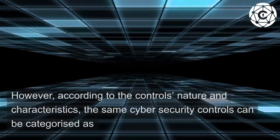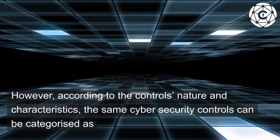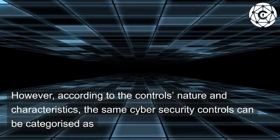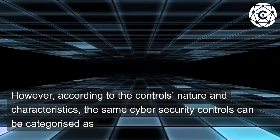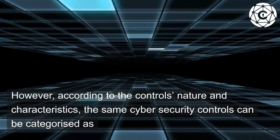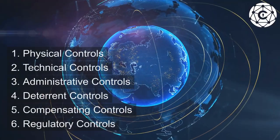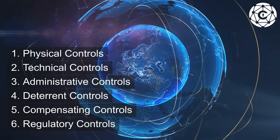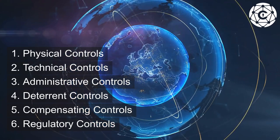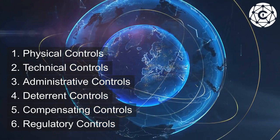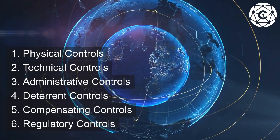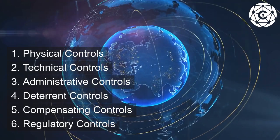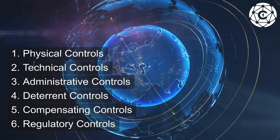However, according to the control's nature and characteristics, the same cyber security controls can be categorized as: 1. Physical controls. 2. Technical controls. 3. Administrative controls. 4. Deterrent controls. 5. Compensating controls. 6. Regulatory controls.